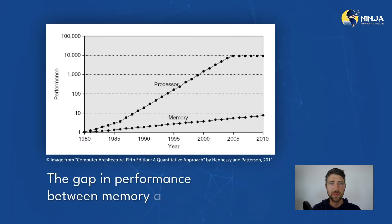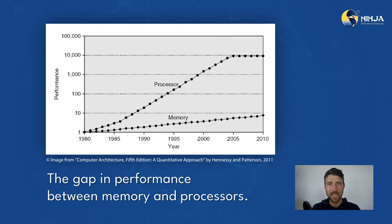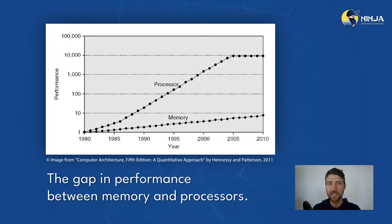Elaborating more on that point, I'm showing you this chart, which illustrates the growth of the gap in performance between memory and processors. The vertical axis is on a logarithmic scale and shows the growth of the CPU-DRAM performance gap. Typical DRAM performance improvement is about 7% per year, while CPUs enjoy much bigger 20 to 50% improvements per year, and the gap is growing. This chart is a little dated, but the gap between the CPU and memory performance only increases.